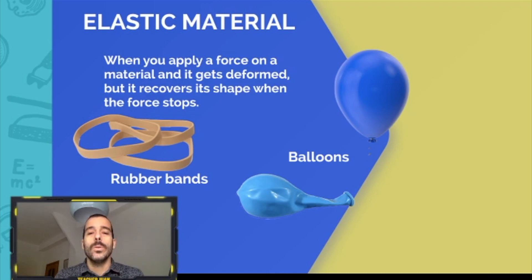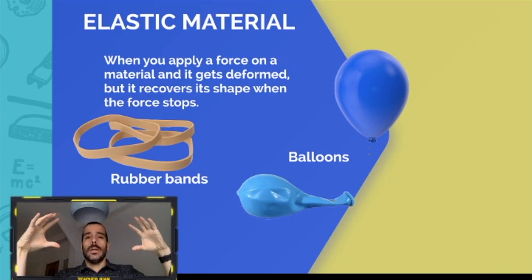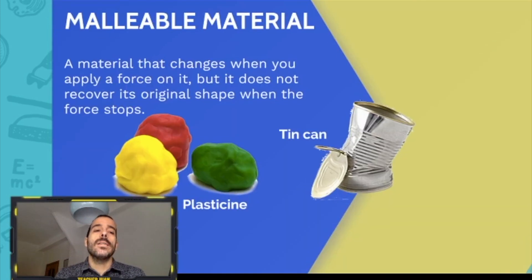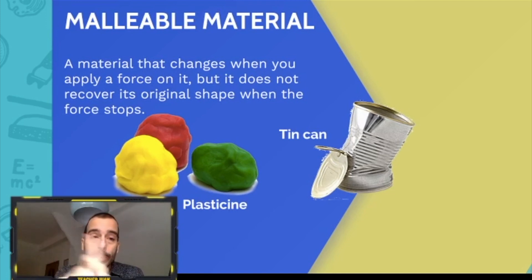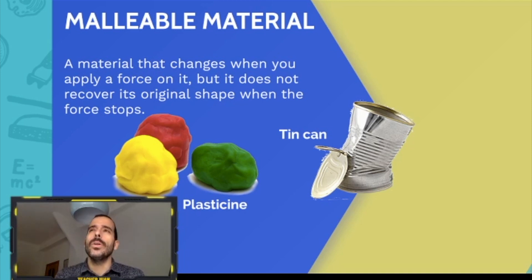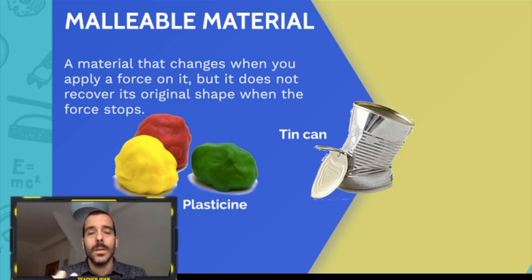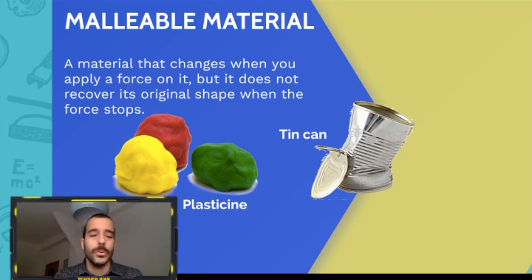That also happens with the balloon — when you put air inside it grows a lot and afterwards it turns back to its original form. So these are elastic materials. Now, malleable materials — a material that changes when you apply a force on it but does not recover its original shape when the force stops. Like this tin can: when you apply force and deform it, the can stays deformed because it's a malleable material. Same with plasticine.